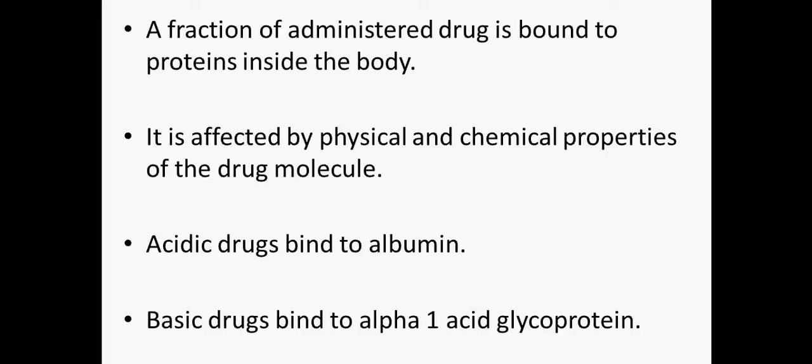So basically plasma protein binding is affected by physical and chemical properties of a drug molecule. So your isoforms of drugs or the various drugs in a single group may have different plasma protein capacities. It all comes down to the molecular structure of the drug and how it affects the plasma protein binding.